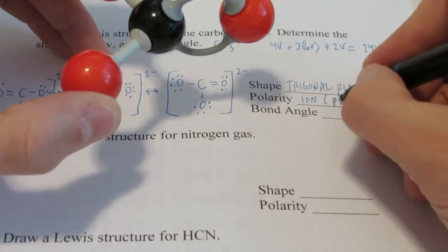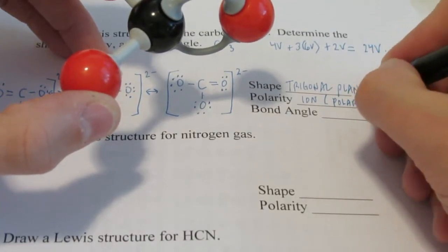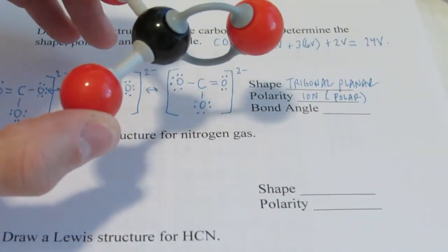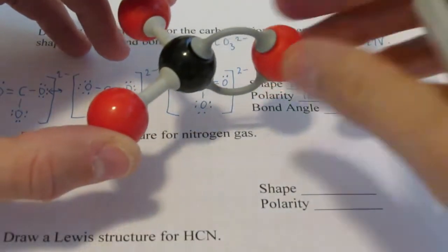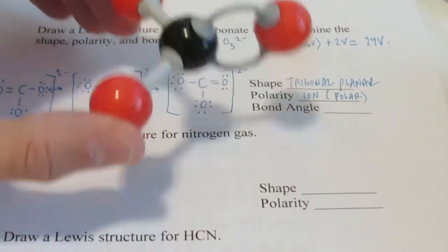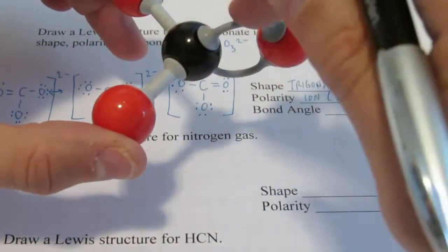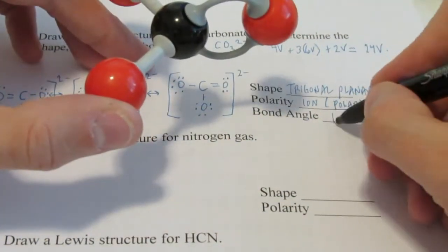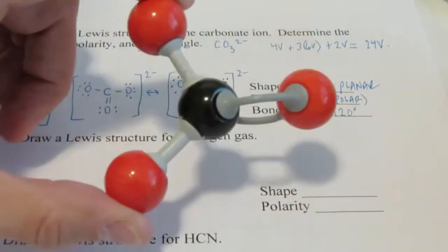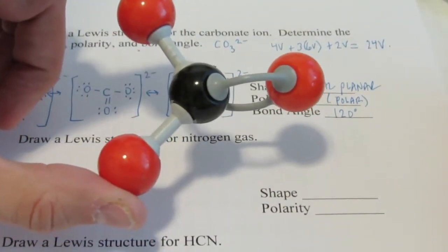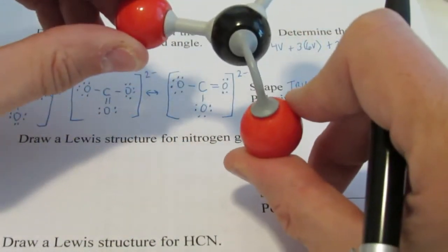Now normally I would say all these dipoles would cancel. And it would be a non-polar molecule. But it is an ion. So ions we're going to say, you know, they carry a charge. We're going to call that polar. It has a two negative charge. And the bond angle? Well, we have three regions of electron density. As far away from each other would be 120 degrees.